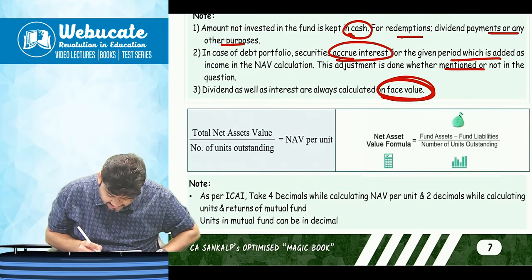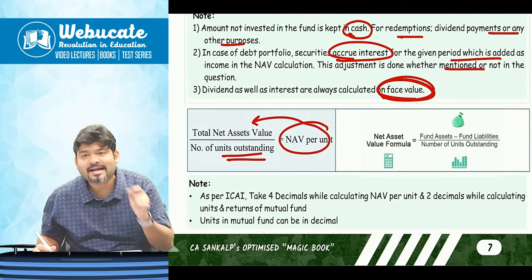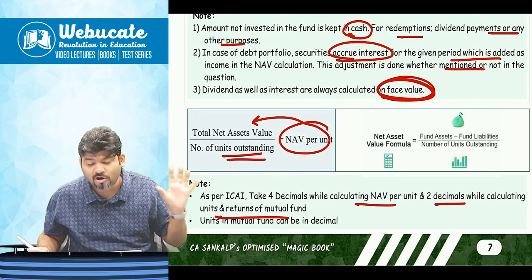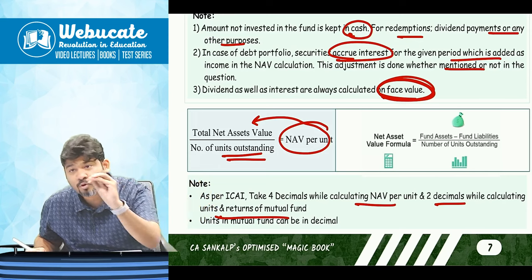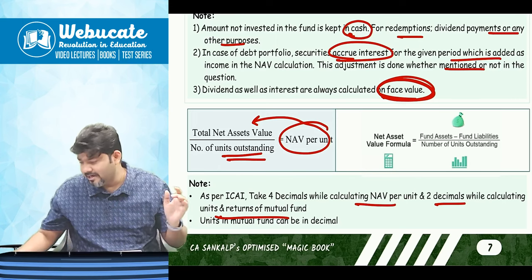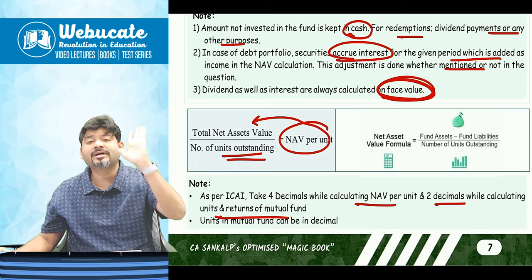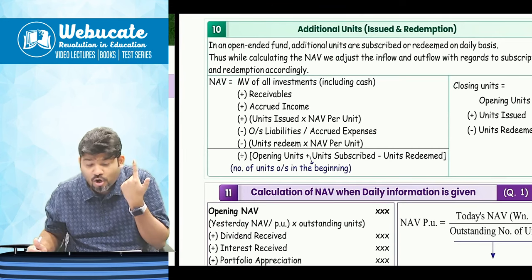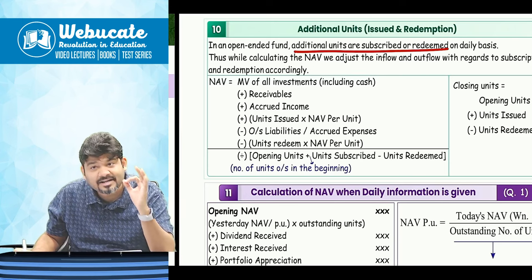NAV per unit equals total net asset value divided by the outstanding number of units. Two important notes: take four decimals while calculating NAV per unit, and two decimals while calculating the number of units and returns of mutual funds. For example, if NAV per unit works out to 21.3742, write it fully. If total units are 1 lakh divided by NAV of 12, that gives 8,333.33 — two decimals for units, four for NAV per unit.